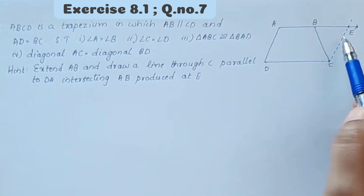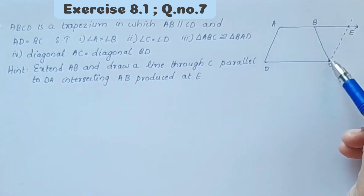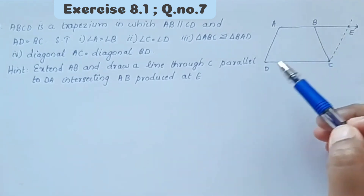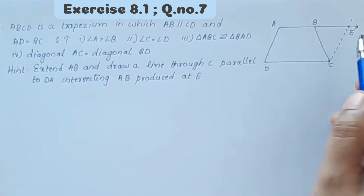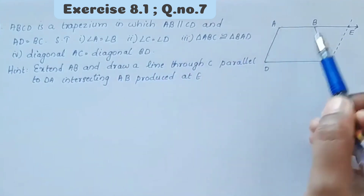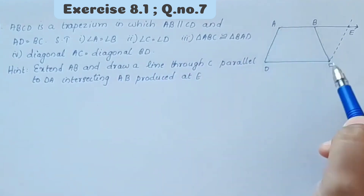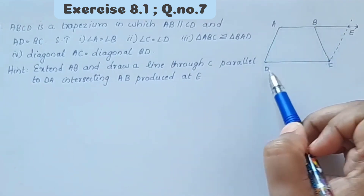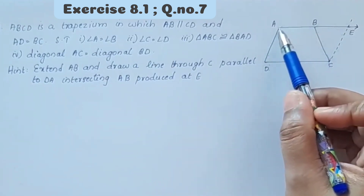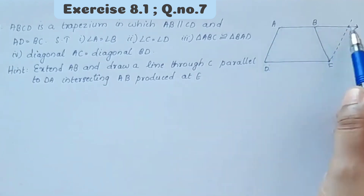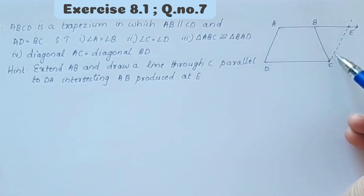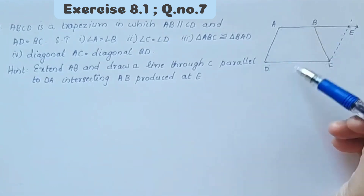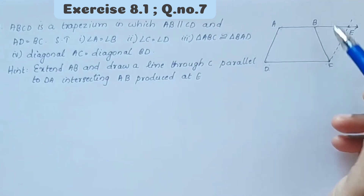Now DA is parallel to CE. We already have AB parallel to CD. This is the construction: AD parallel to CE.